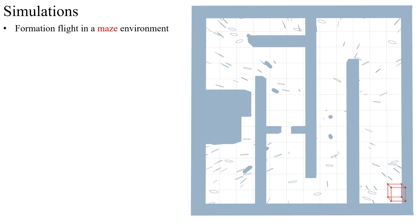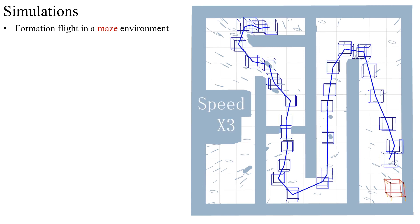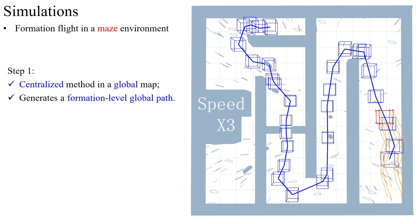Here we set up a special maze simulation environment, which consists of walls and many small obstacles such as posts and rings. The formation-level global path finding method first runs in the global known environment. It generates a global path which considers the scale of formation shape, as shown by the blue line in the video, with the sampling points represented by the blue cube shapes.